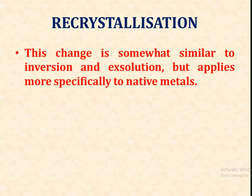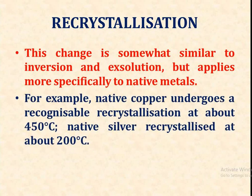The next method is recrystallization. This change is somewhat similar to inversion and exsolution but applies more specifically to native metals. For example, native copper undergoes a recognizable recrystallization at about 450 degrees Celsius, and native silver recrystallizes at about 200 degrees Celsius.